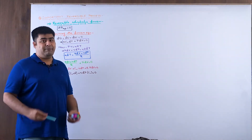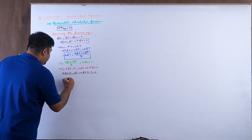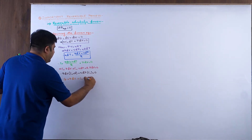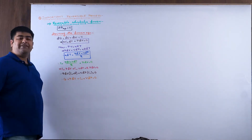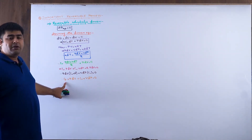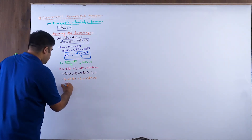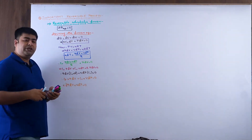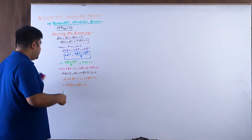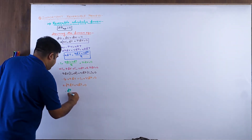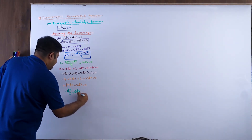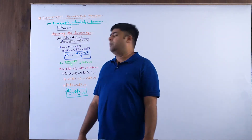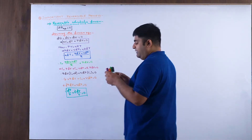Now, Cᵥ + R = Cₚ. So: Cₚ · p dV + Cᵥ · V dp = 0. Dividing the entire equation by Cᵥ gives us Cₚ/Cᵥ, which is gamma. So: γ · p dV + V dp = 0. Now divide the whole thing by pV: dp/p + γ dV/V = 0. We are now in an integrable format.